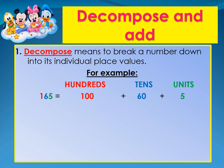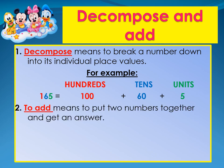The hundreds are in red, the tens are in blue, and the units are in green. To add means to put two numbers together and get an answer. For example, 126 plus 112 is equal to 238.